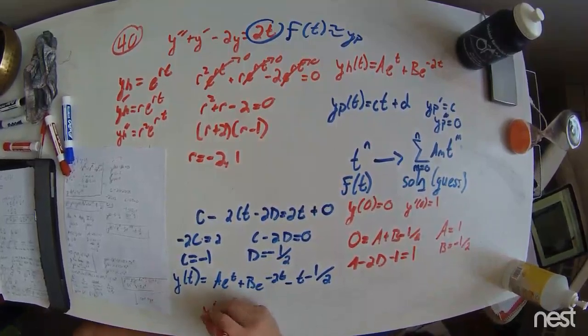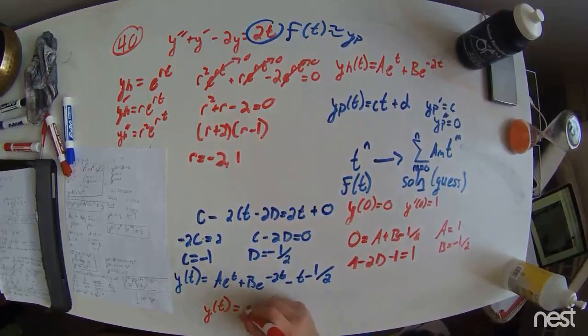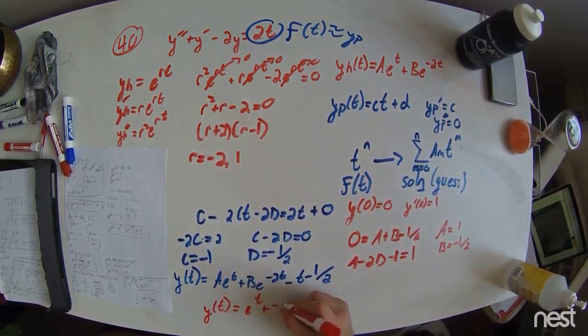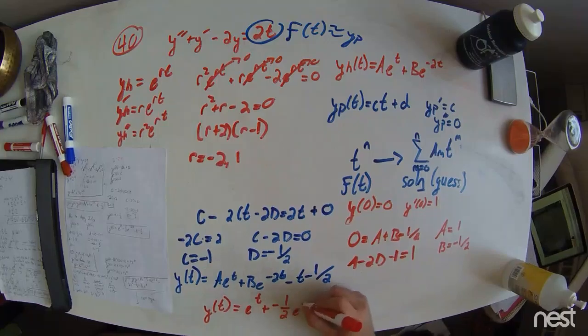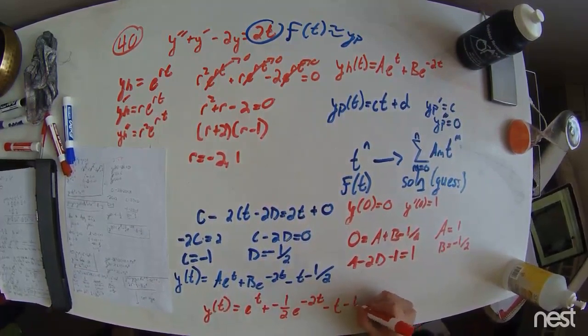So now our full expression for y of t written: y of t equals e to t plus negative half e to the minus 2t minus t minus 1 half.